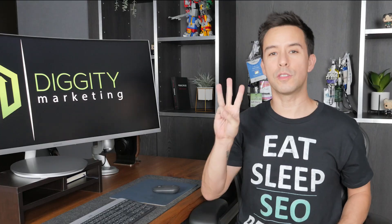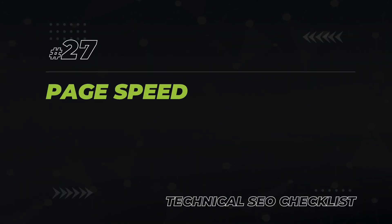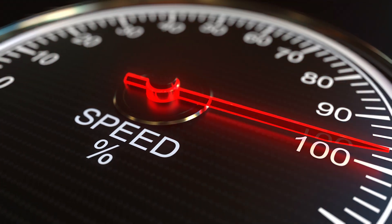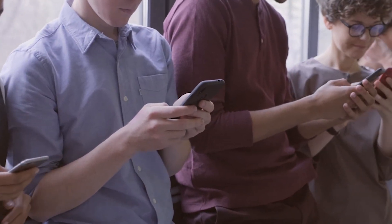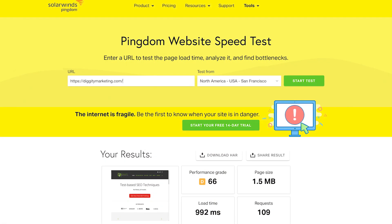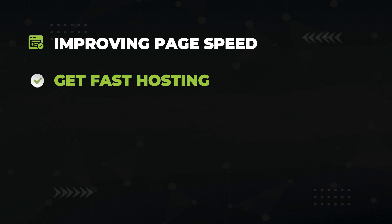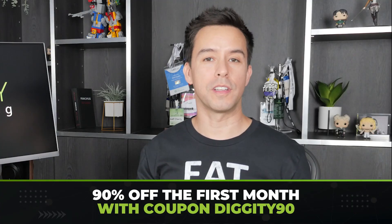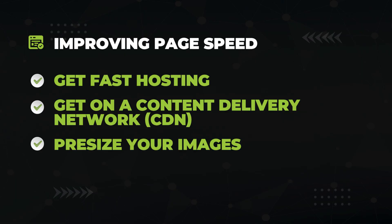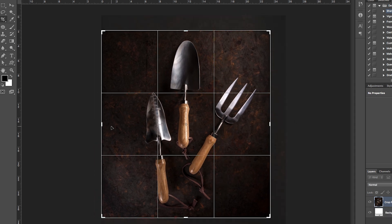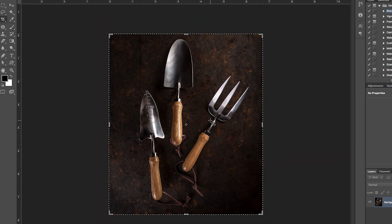Now we get into the technical SEO checklist. Technical SEO is all about making life easy for Google to access your website, and when you make life easy for Google, they make life easy for you. There are three primary technical SEO issues you're very likely to face. The first is page speed — Google wants its users to be happy, and that means serving up web pages that load quickly. A majority of search happens on mobile and that number grows over time. Use a free tool like Pingdom to check your load time — less than two seconds is the goal. Best practices include getting on a fast hosting service like WPX Hosting (coupon code Diggity90 gets you 90% off), getting a CDN like the free version of Cloudflare, and pre-sizing your images before uploading.